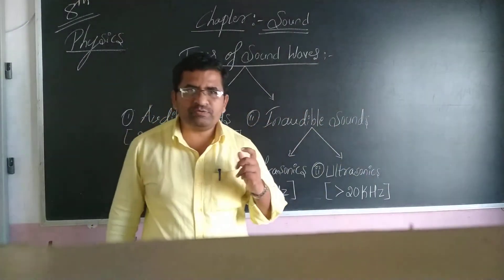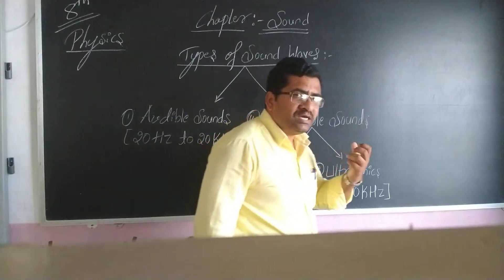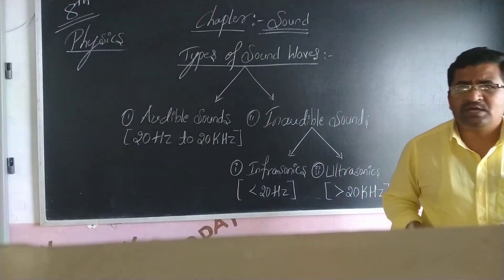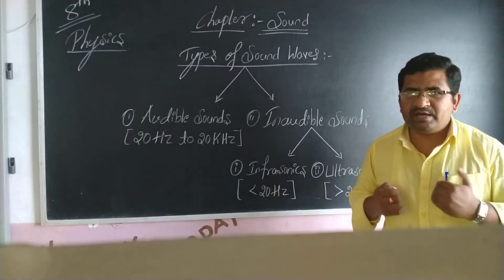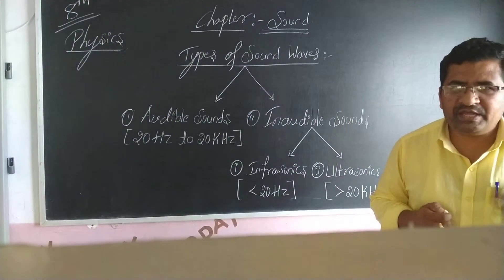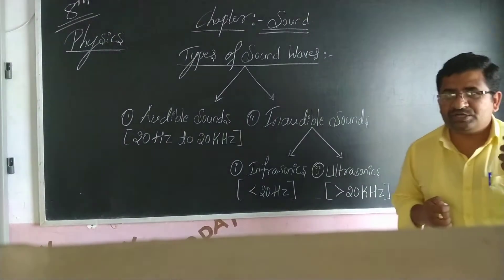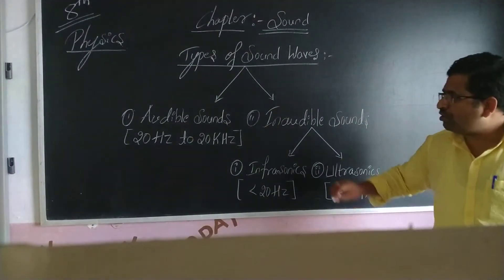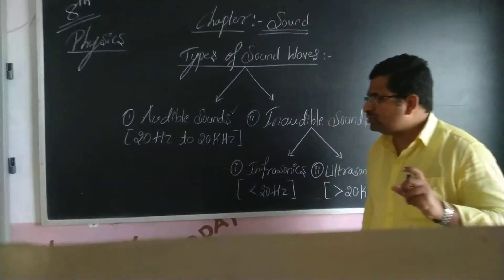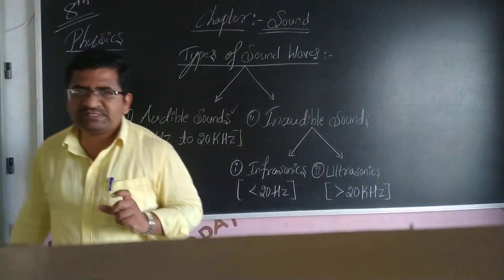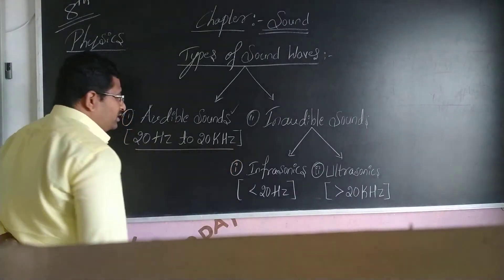audible sound waves are the sound waves those are heard by us — humans — very easily and very comfortably without making use of any external devices. Those are heard as audible sounds. Whatever these audible sounds, those fall in a frequency range of 20 hertz to 20 kilohertz.